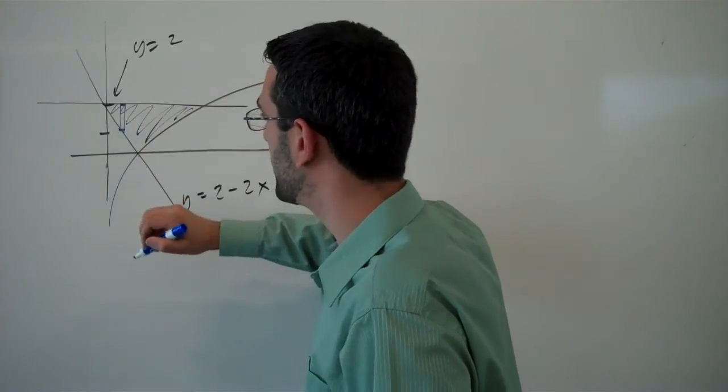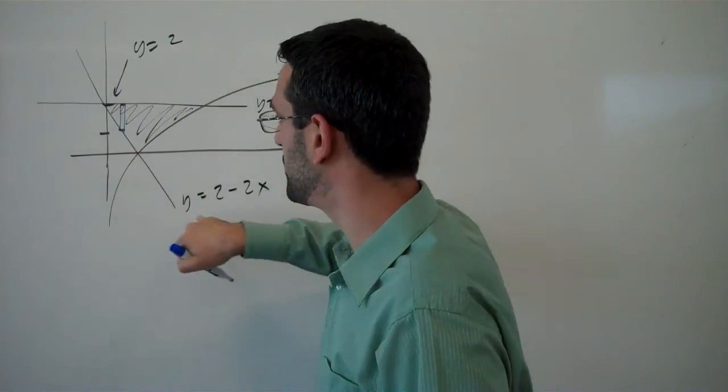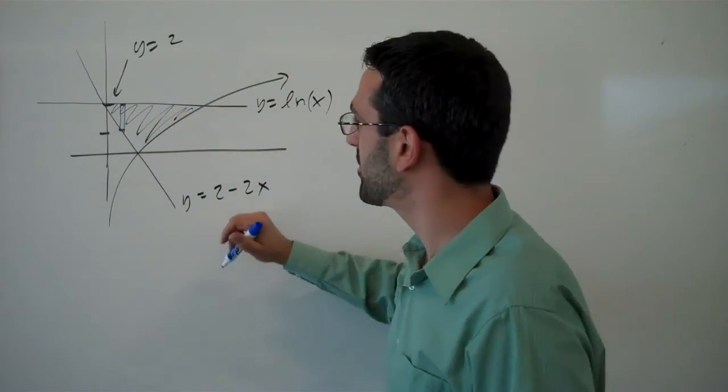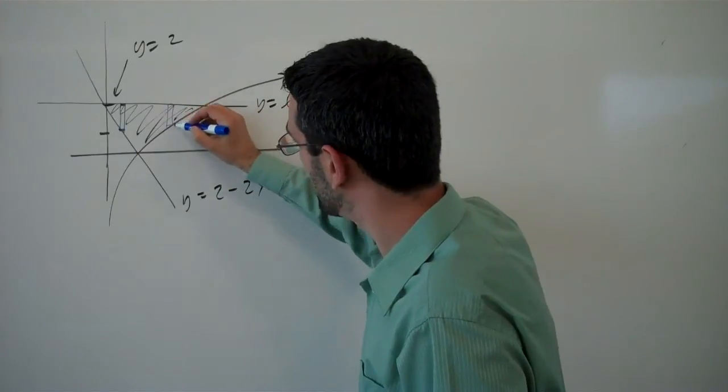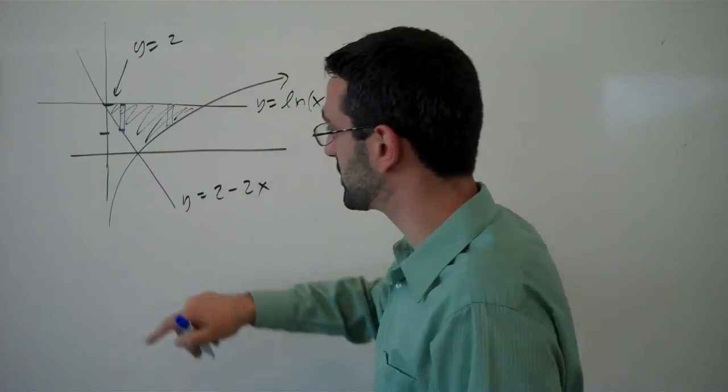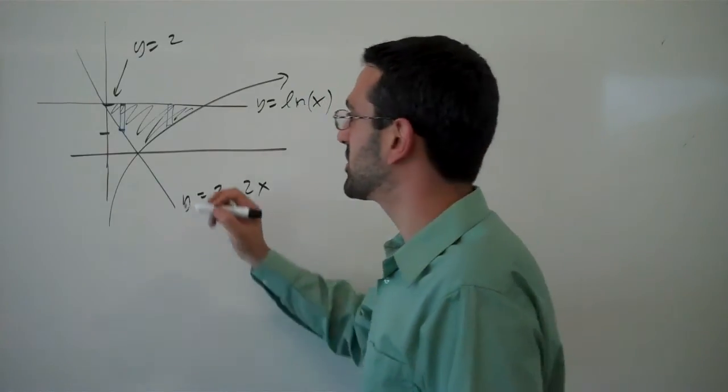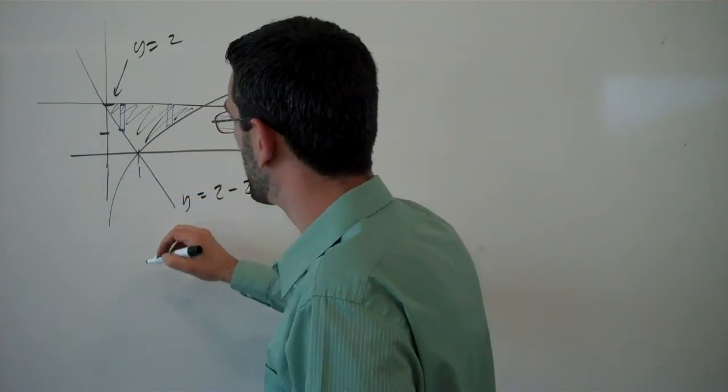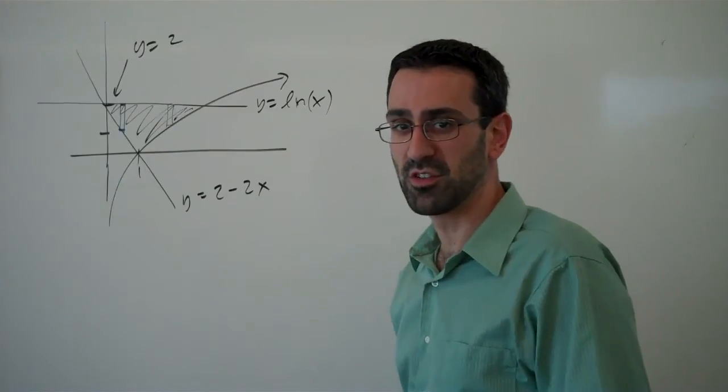So the slices here would have the line y equals 2 on the top and this curve on the bottom. And slices here would have the line on top and the log function on the bottom. And so we would end up needing to set up two integrals.